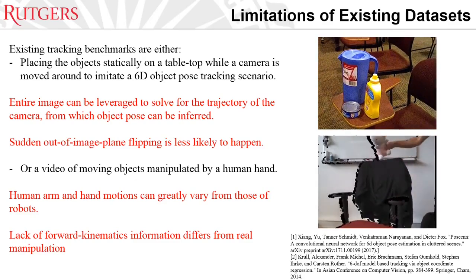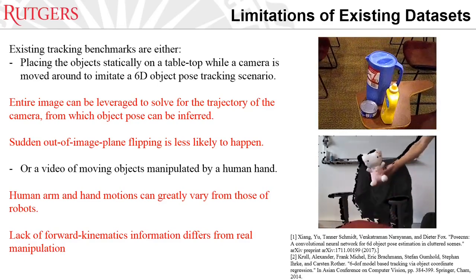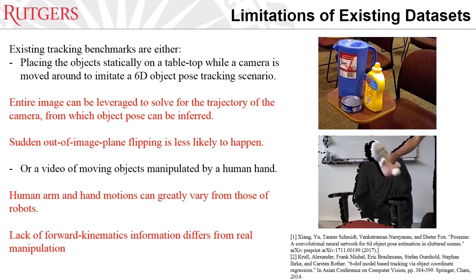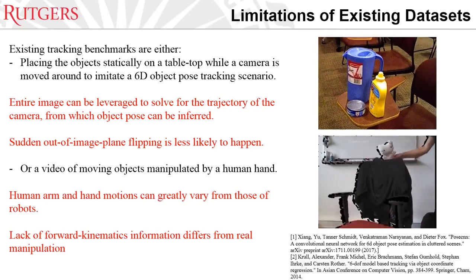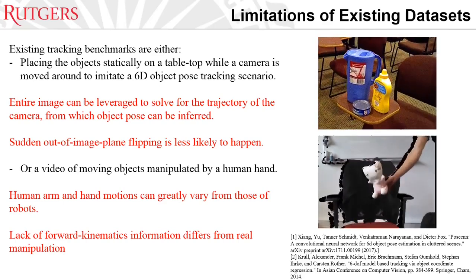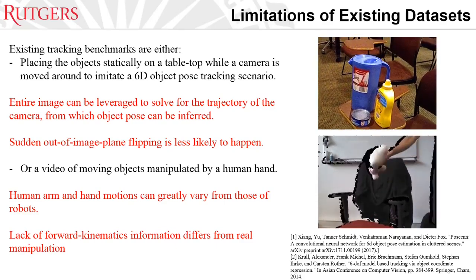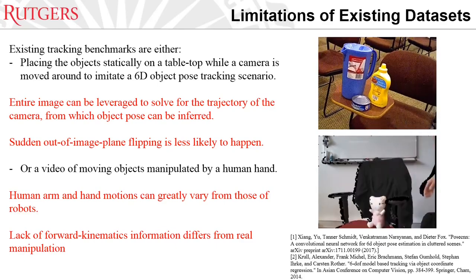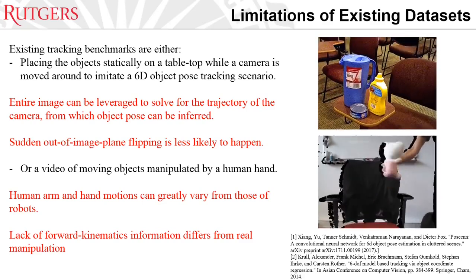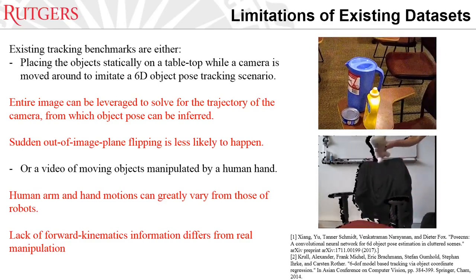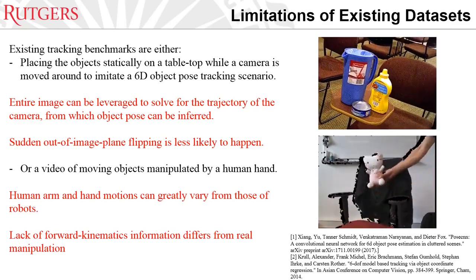So far, we've been only evaluating on the YCB video dataset. For other existing datasets, there are several limitations. They can either place objects statically on a tabletop while a camera moves around to imitate a 6D-pose tracking scenario — however, the entire image can be leveraged to solve the camera trajectory from which the object's pose is inferred, and sudden out-of-image-plane flipping is less likely to happen. For some other datasets, videos of moving objects manipulated by human hands mean that hand and arm motions can greatly vary from those of robots. Also, the lack of forward kinematics information differs from real robotic manipulation scenarios.